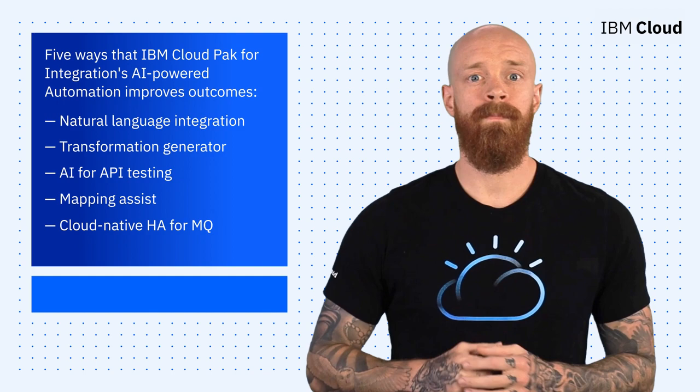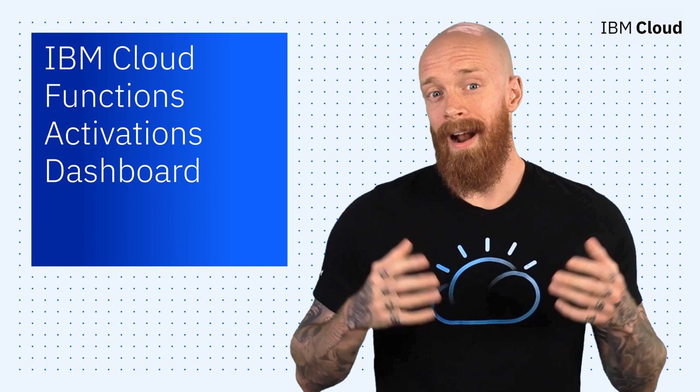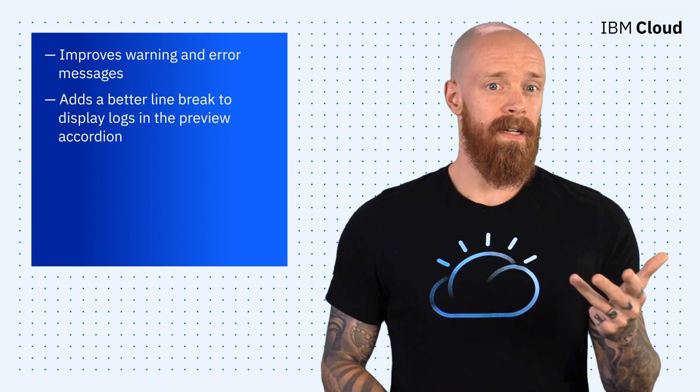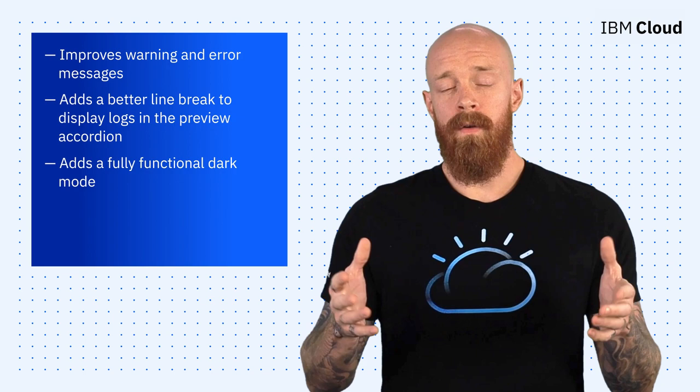To finish things up this week, let's take a look at the all-new Activations Dashboard for IBM Cloud Functions. Among the many improvements to the UI and UX, the new dashboard restructures the filtering options, sorts the data in every graph in a chronological and synced-up order, improves warning and error messages, adds a better line break to display logs in the preview accordion, and adds a fully functional dark mode. To start experimenting with the all-new Activations Dashboard for IBM Cloud Functions, check out the link below.